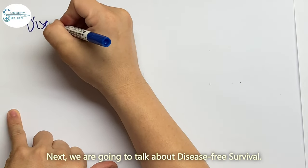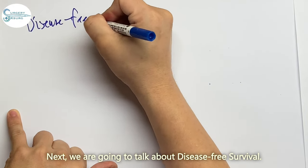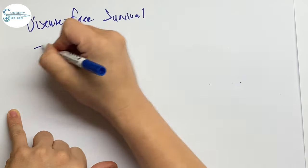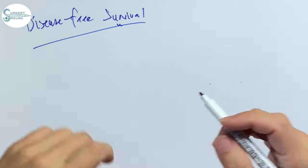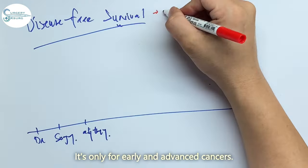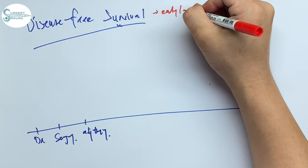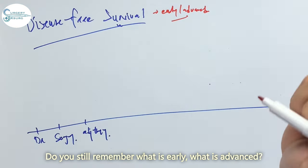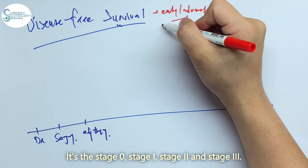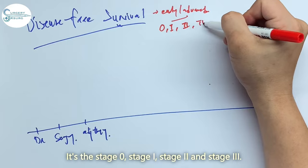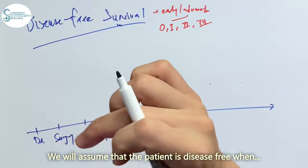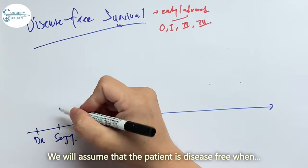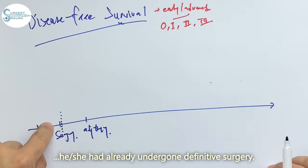Next, we are going to talk about disease-free survival. When you are talking about surveillance, disease-free survival is very important. It's only for the early and advanced cancer. Still remember what is early, what is advanced? It's stage 0, stage 1, stage 2, and stage 3. We will assume that the patient is disease-free when he or she has already undergone the definitive surgery. Adjuvant therapy per se is much for prevention of recurrence.